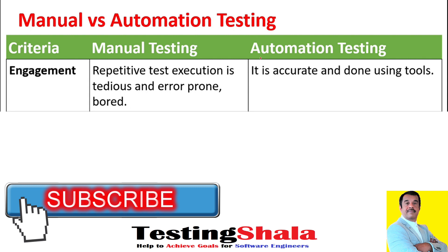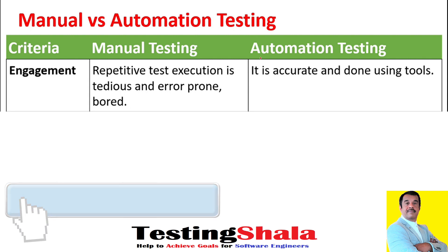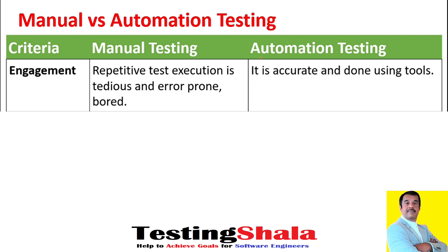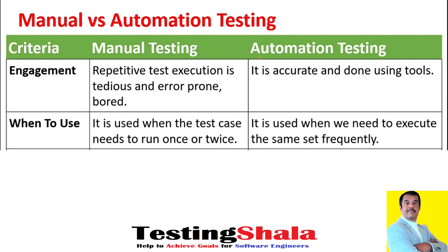In automation testing, using tools brings more accuracy and better results, and testers feel more challenged because they keep programming, adding automated scripts every day, and feel more encouraged. When to use manual testing: whenever you need to execute a test case only once or twice over its entire lifecycle, go for manual testing. Otherwise, go for automated testing — where you will keep executing the test more often, in hundreds of times.